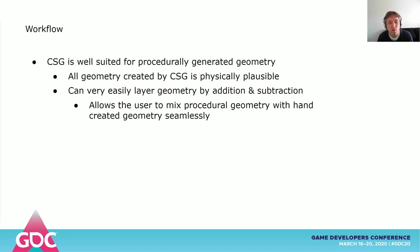CSG is also well suited for procedurally generated geometry. All geometry created with CSG will always be solid by its very nature. Therefore, even when a procedural algorithm fails, it will still end up with physically plausible shapes. Your collision mesh will still be valid — you'd never end up with a polygon soup. You can easily combine layers of geometry by adding and removing geometry, some of it hand-crafted, other parts created procedurally, all seamlessly working together.